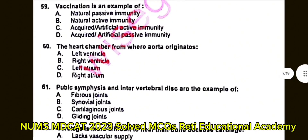Question number 59: Vaccination is an example of? A. Natural positive immunity. B. Natural active immunity. C. Acquired artificial active immunity. D. Acquired artificial passive immunity. The correct answer is C: Acquired artificial active immunity.